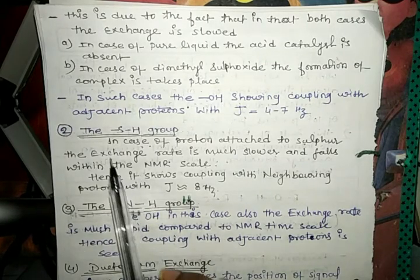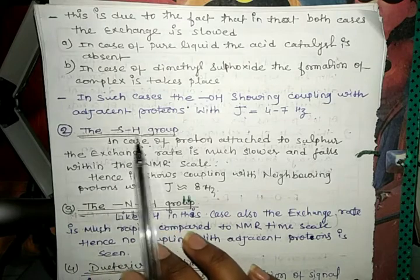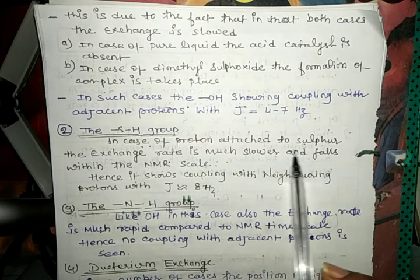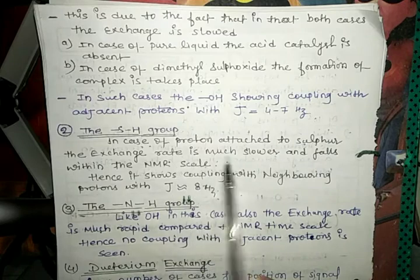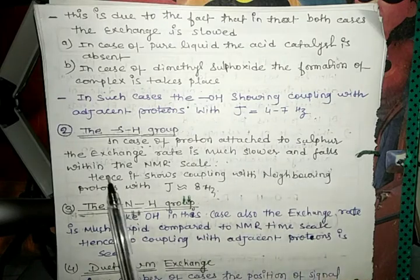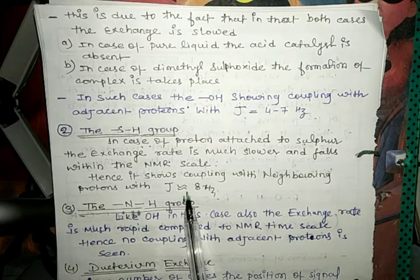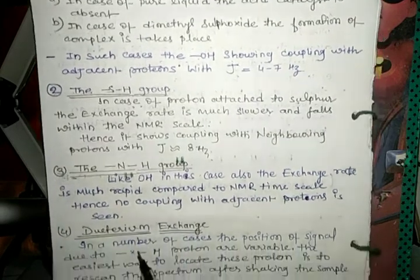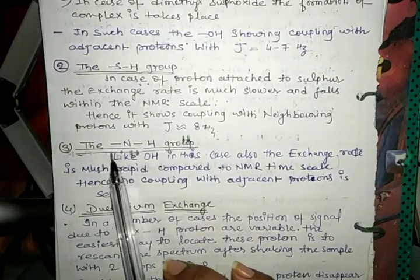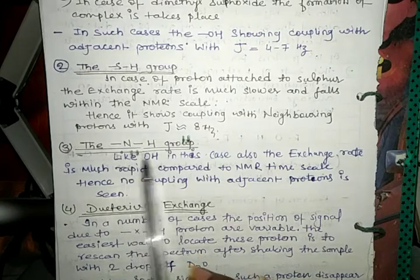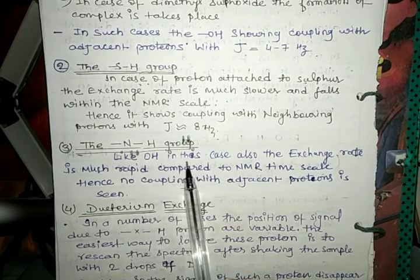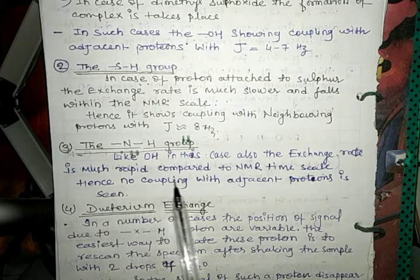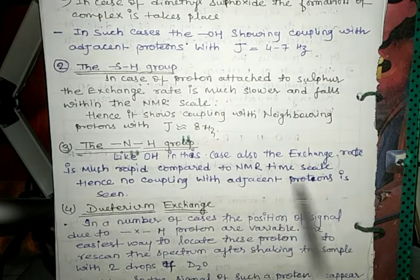When the SH group is present, the exchange rate of the proton attached to sulfur is much slower and falls within the NMR timescale; hence SH shows coupling with the neighboring proton with J similar to 8 Hz. When an NH group is present, similar to OH, the exchange rate is much more rapid compared to the NMR timescale, so no coupling with the adjacent proton is seen.